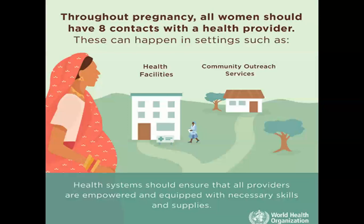Low-risk pregnancy should have at least eight visits, especially if the pregnant woman is multiparous. If she is primiparous, the visits should be at least eleven. If the woman is high risk for complications, the visits will be more than that.